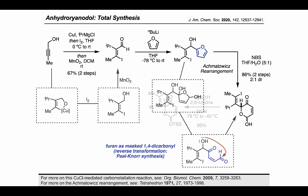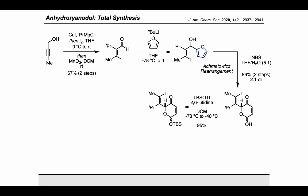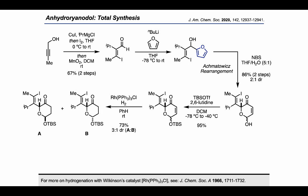Moving forward, they carried out a TBS protection of the acetal alcohol followed by a hydrogenation with Wilkinson's catalyst, which was selective for the enone. This provided the diastereomeric products A and B, where the stereochemistry of the acetal stereocenter was considered inconsequential. For the sake of simplifying compound characterization, the authors carried on with diastereomer A.